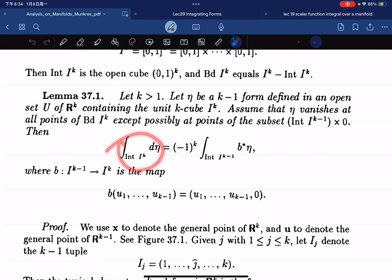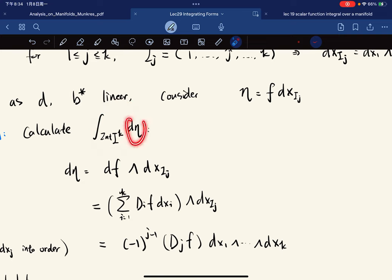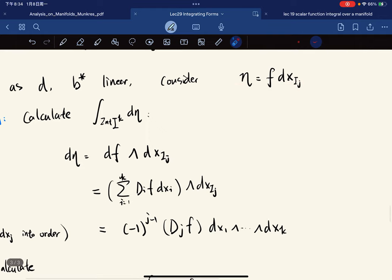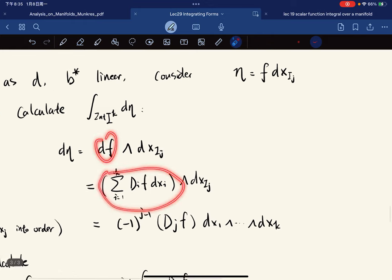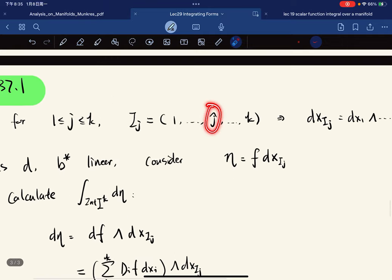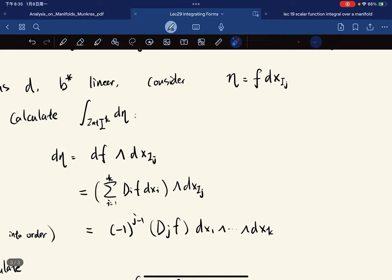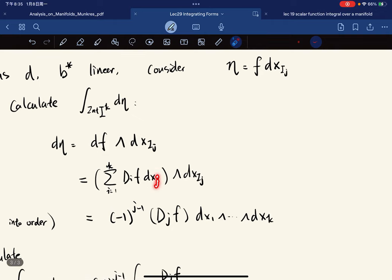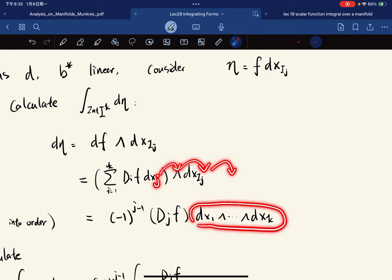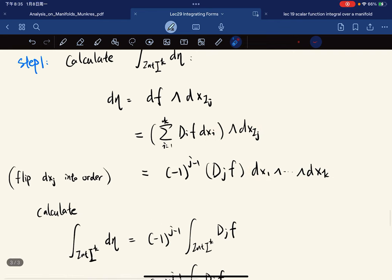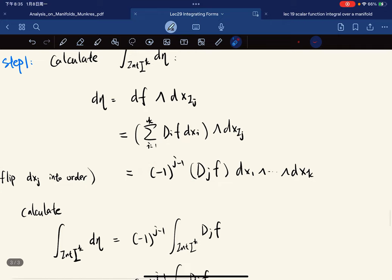Since d b* is linear, we consider η equal to this. So we calculate this side first. To look at this we have to look at d η first. It equals this—we have a sum here extending from 1 to k. But this one ignores j, so as you run through from 1 to k there will be duplicates except for x_j. So if x_j appears, all the other terms vanish. The only one left is with x_j. You flip x_j all the way to its position—we arrange it in ascending order—and you can do some mental math. We have to flip this j-1 times.